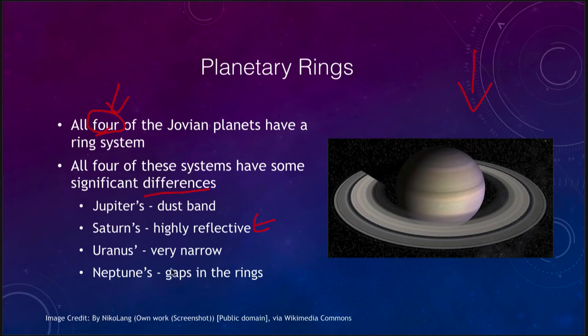The next set to be detected were those of Uranus. Uranus has very narrow rings and very dark rings, and they were detected when a star was occulted by the rings — the rings blocked out the light of that star and caused it to dim. Jupiter's were the next detected, which are a very faint dust band, some very minor rings, but there is at least some portion of a ring there.